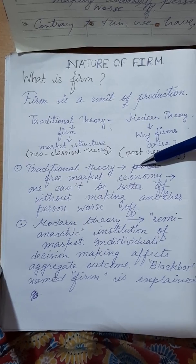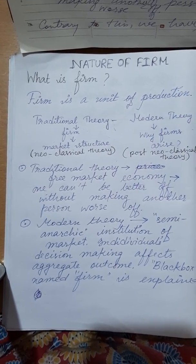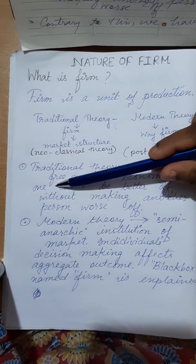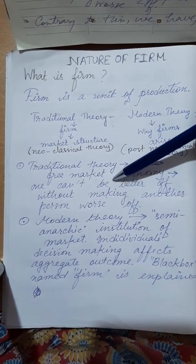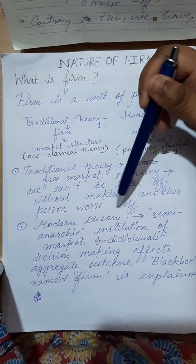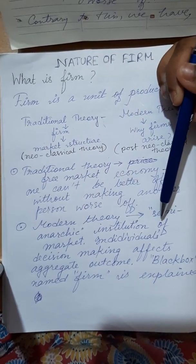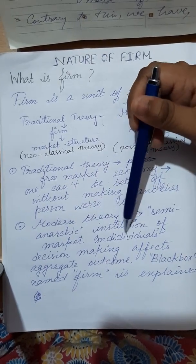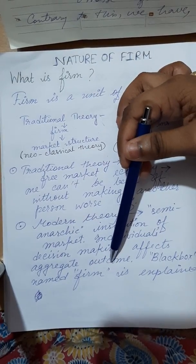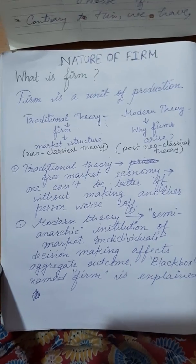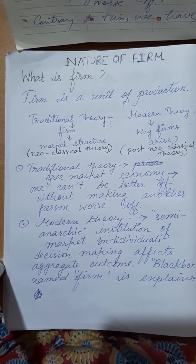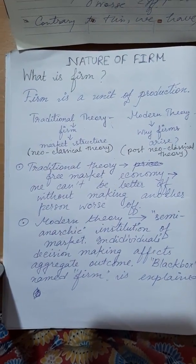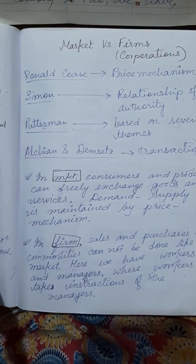According to the traditional theory, there is a free market economy based on Adam Smith's laissez-faire economy — the theory of the invisible hand — where one person cannot be made better off without making another person worse off. On the other hand, the modern theory is based on the semi-anarchic institution of the market, where individual decision-making affects the aggregate outcome. These theories have tried to analyze what happens inside the black box called the firm, studying intra-firm behavior.